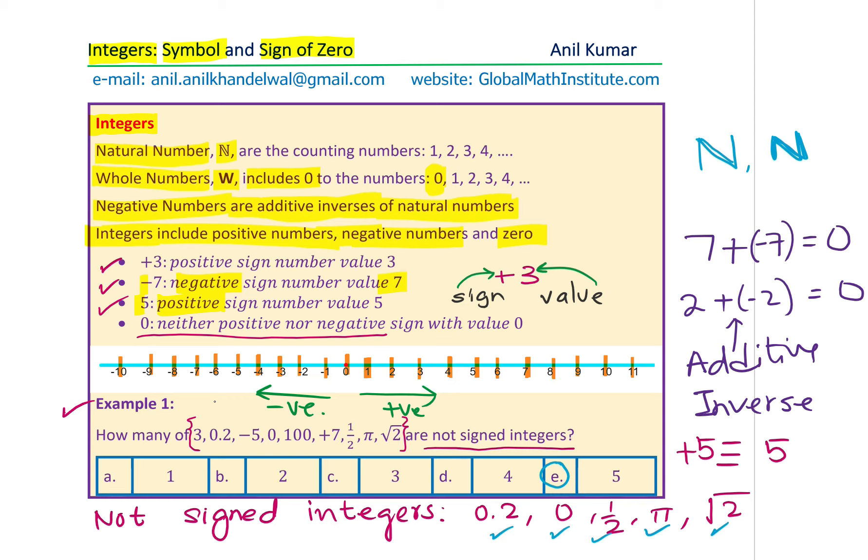So I hope you clearly understand what integer signs could be and whether zero can have a sign and how. Thanks for your time and all the best.